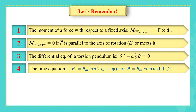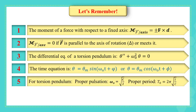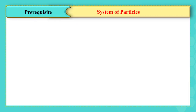The time equation is a sinusoidal function: θ = θ_max · sin(ω₀t + φ). For a torsion pendulum, the proper pulsation is ω₀ = √(C/I) and the proper period is T₀ = 2π√(I/C). Let's take some prerequisites. We have studied before that the linear momentum of the system of particles is equal to the linear momentum of the center of mass of the system.